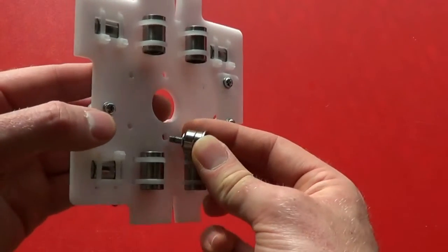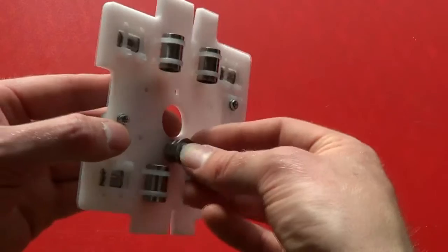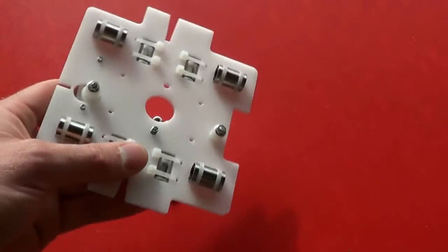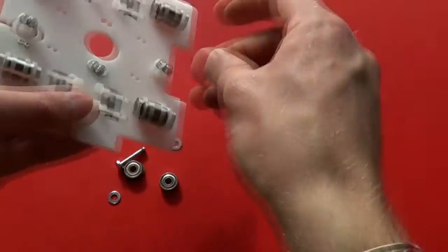Place that through the hole in the carriage plate. Turn it over. And put a washer and nut on the back.